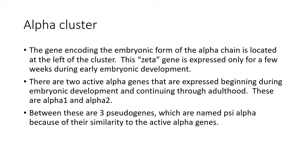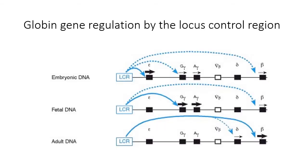The globins are expressed in order of development as they exist along the complete locus. For the alpha, the zeta is only expressed for a few weeks, and then the adult alphas are switched on. For the beta locus, there is an upstream locus control region. Early in embryonic development it directs expression of the early epsilon form, then switches to the G gamma and A gamma fetal forms in the fetus, and then around the time of birth switches on the adult beta form.